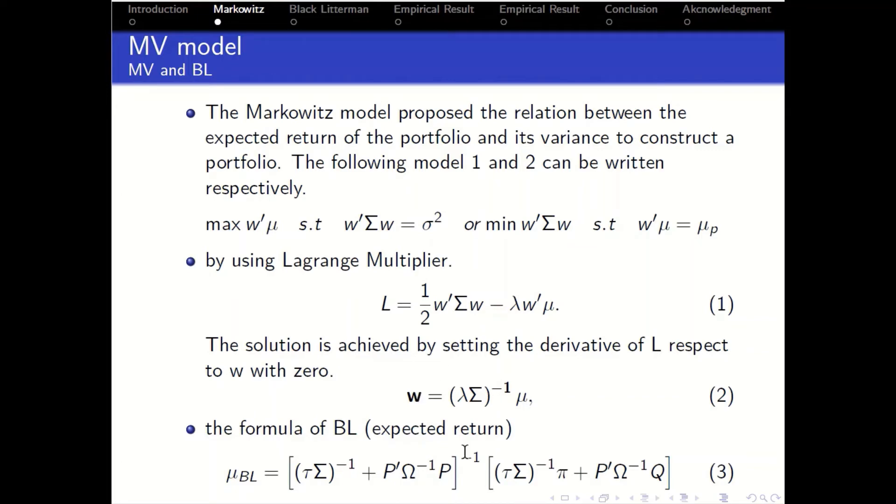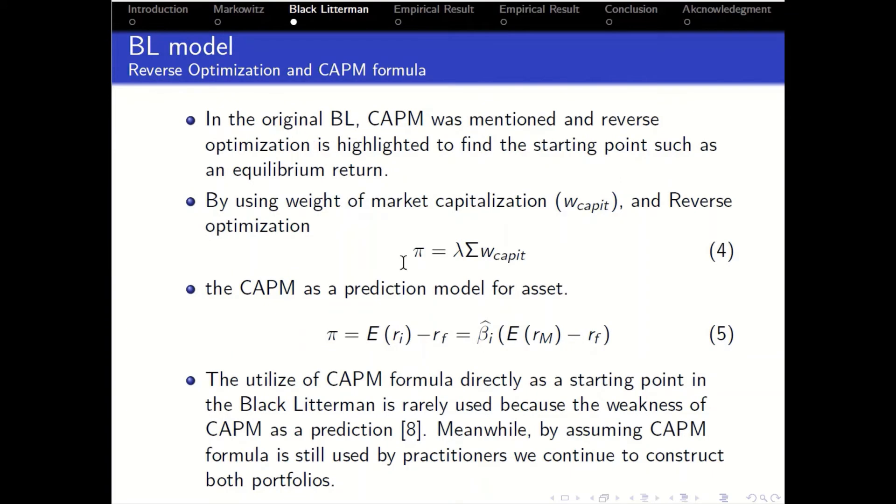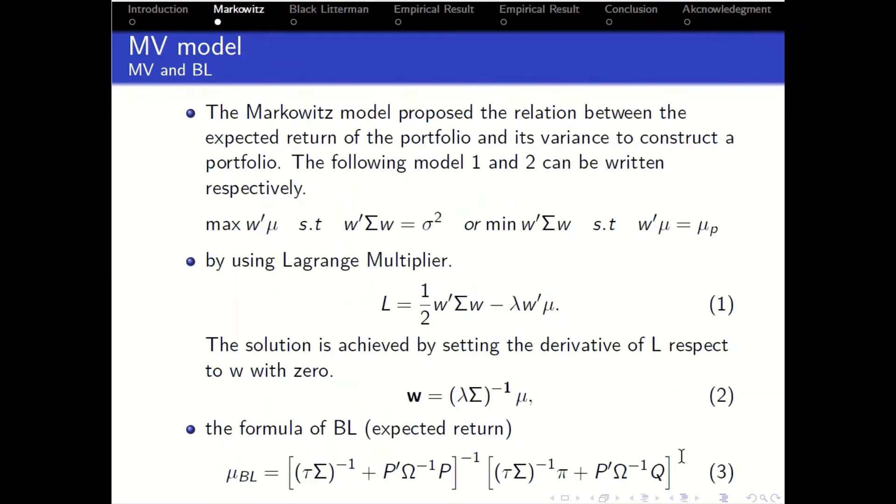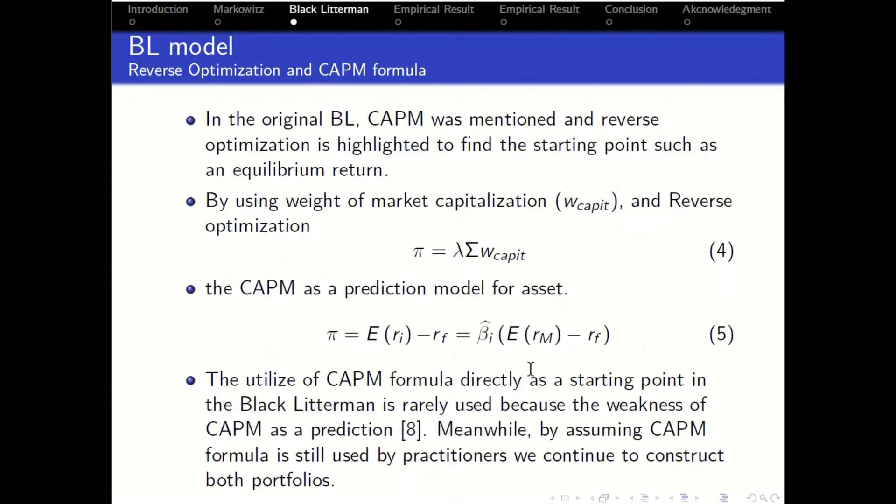This is the general optimization, but how to get the P, how to get the Q, how to get the components in Black Litterman. In this study, we only focus on P. As mentioned before, there are two types derived from weight market capitalization and from CAPM formula.